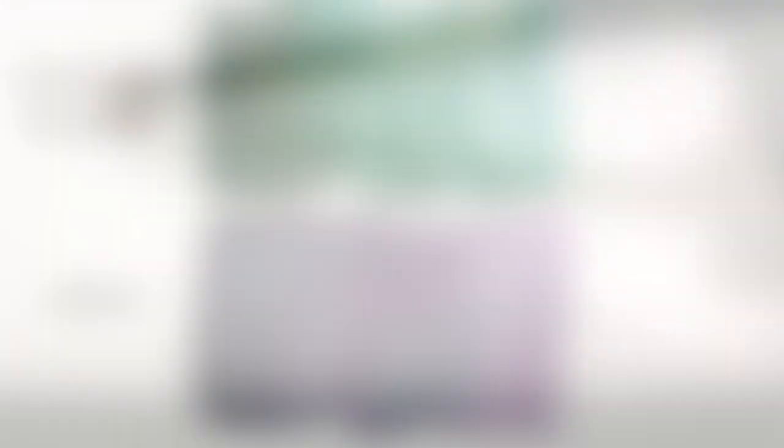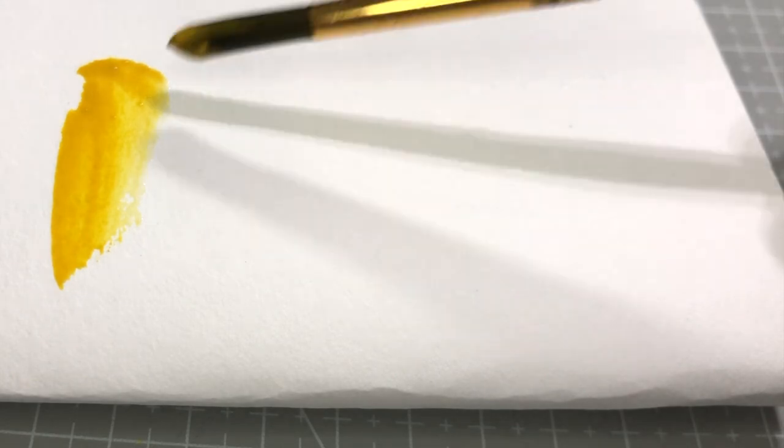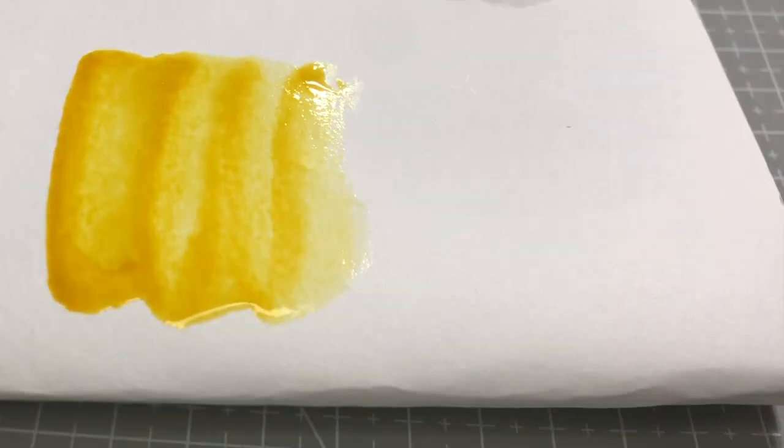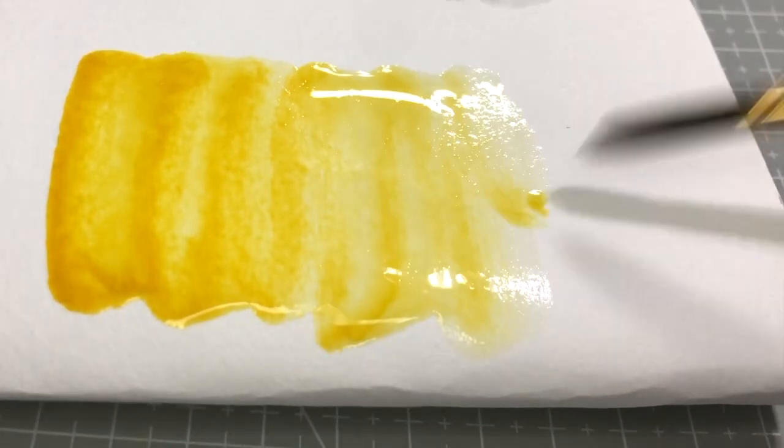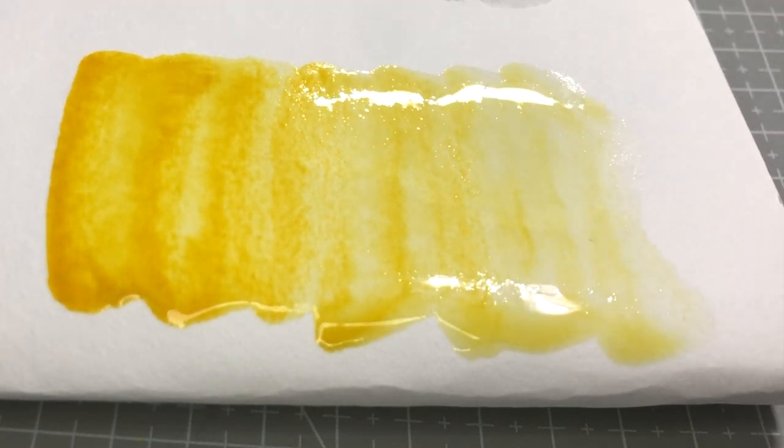And then we have here Cobalt Yellow, made with PY40. I was afraid you wouldn't be able to see the granulation, since it's always a bit hard to see yellow, but as you can see, the granulation is absolutely visible on its own, as well as in this mix with Phthalo Turquoise. So beautiful!